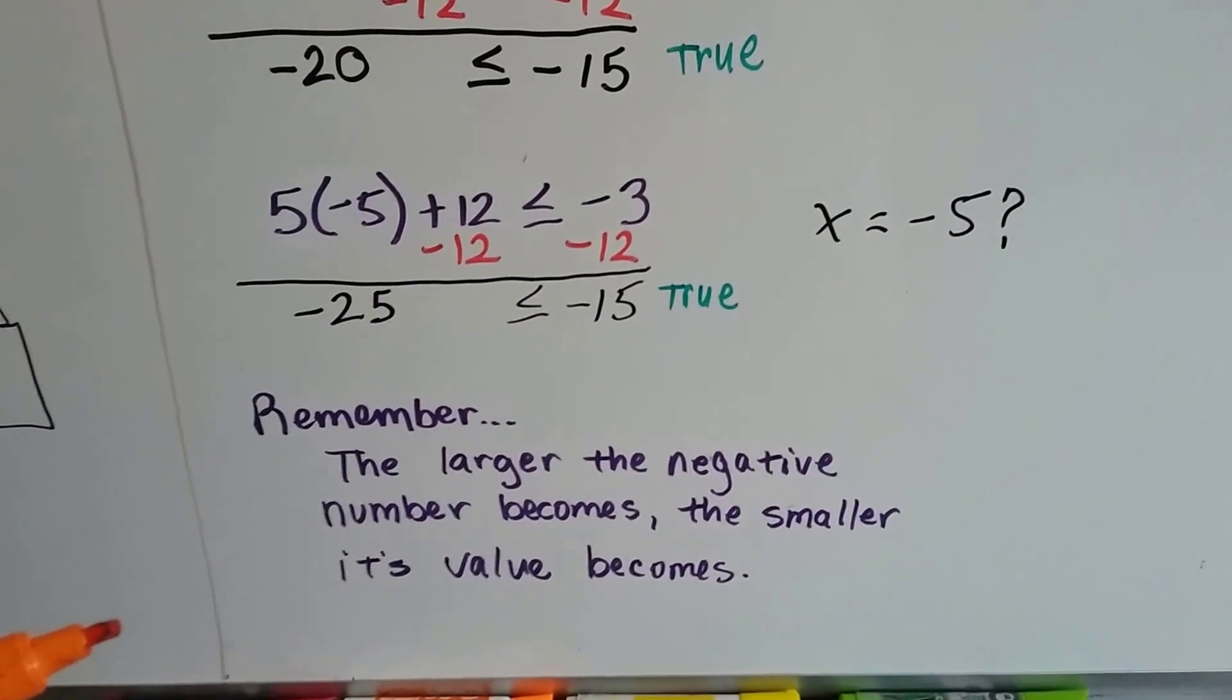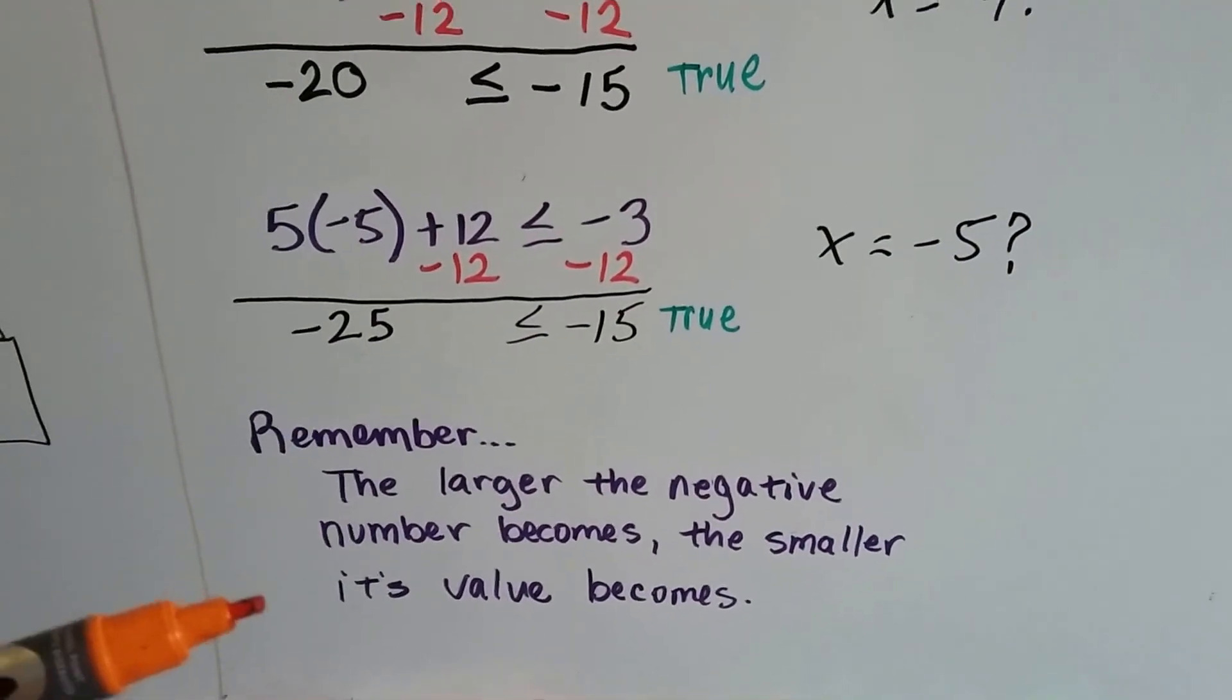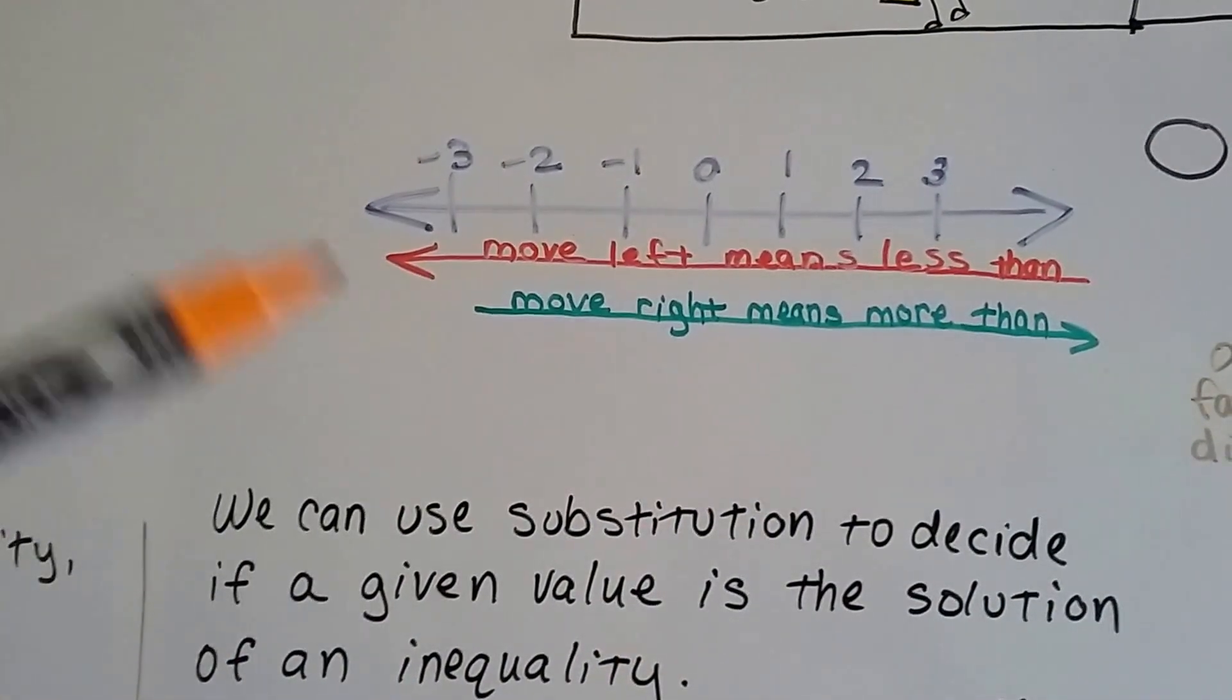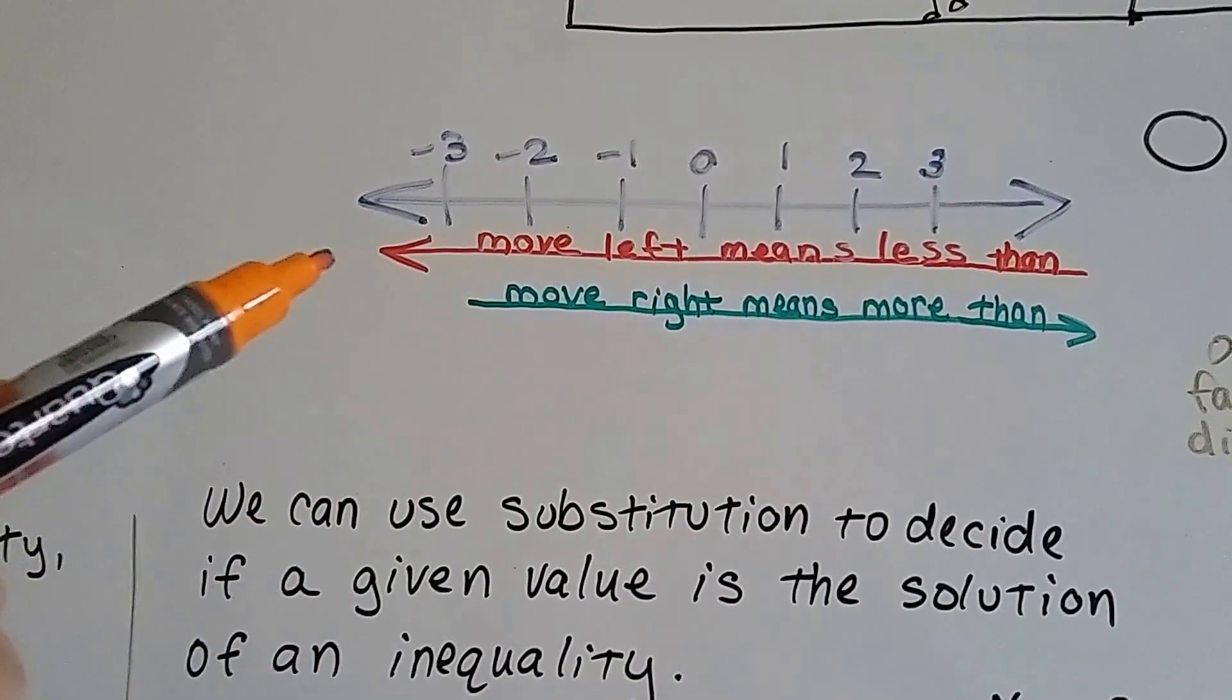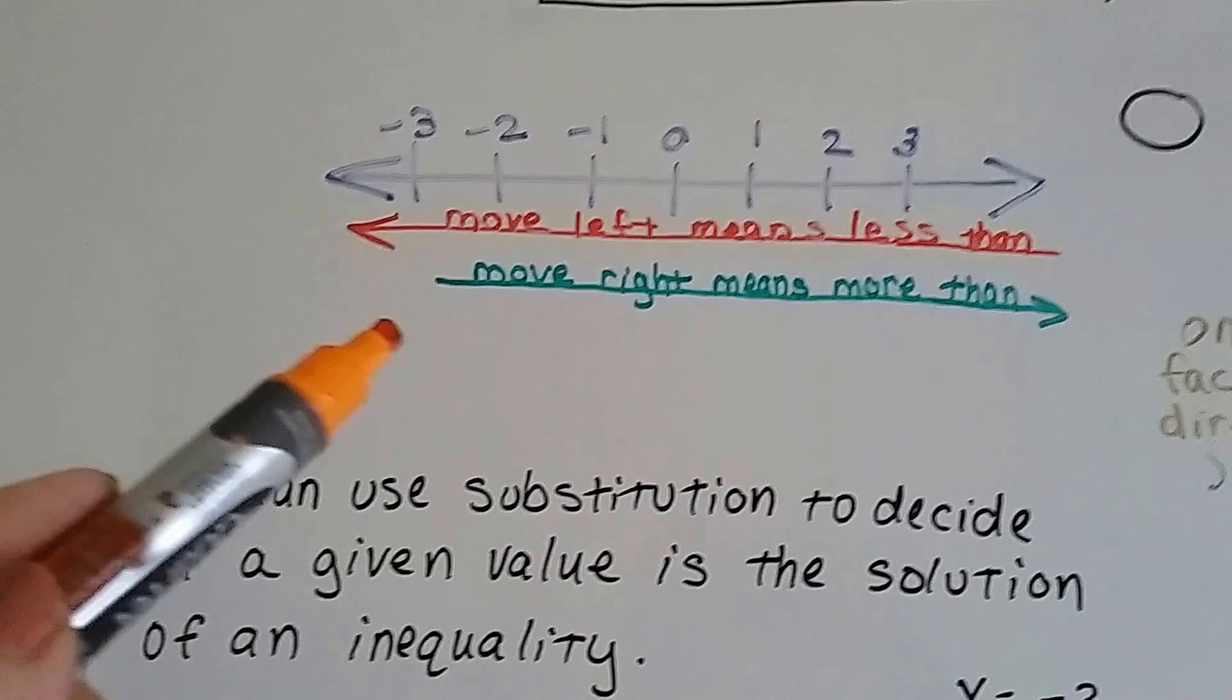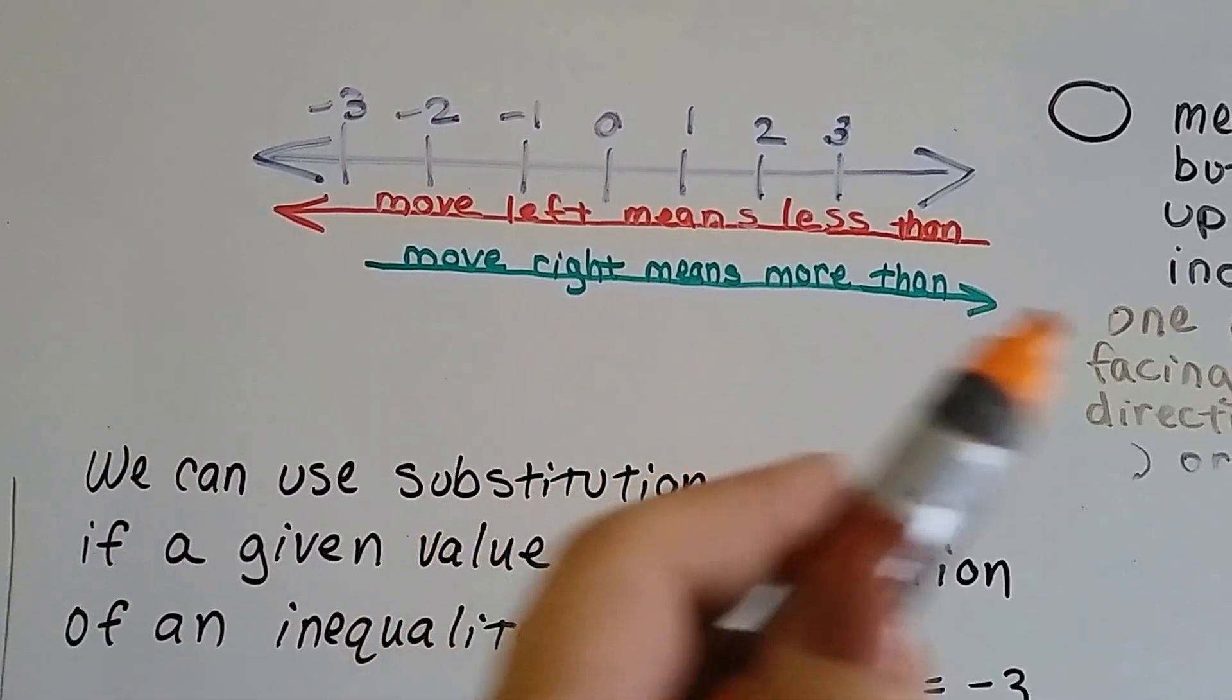So remember, the larger the negative number becomes, the smaller its value becomes. The more we move to the left, even though the number seems to be growing 14, 15, 16, 17, it's actually getting smaller. So use the correct sign to show that it's a less than. And of course when you move to the right it's getting bigger.